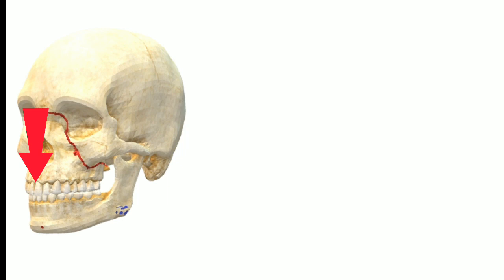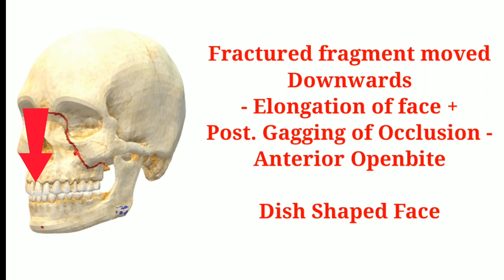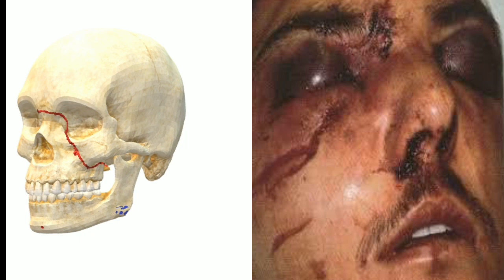Upward impaction leads to shortening of the face and anterior open bite. Alternatively, the fractured fragment can be forced downwards, leading to elongation of the face. Because of posterior gagging of the occlusion, this also leads to anterior open bite, and the appearance of the face in these cases will be a dish-shaped face.